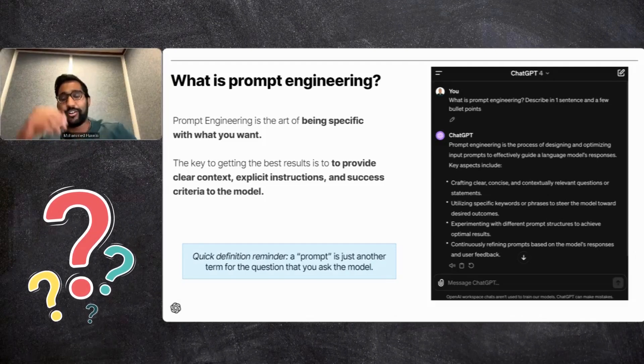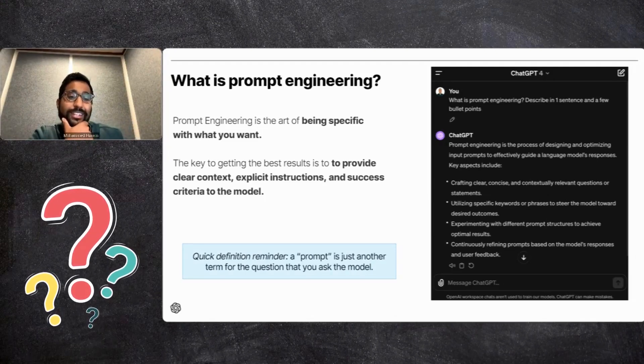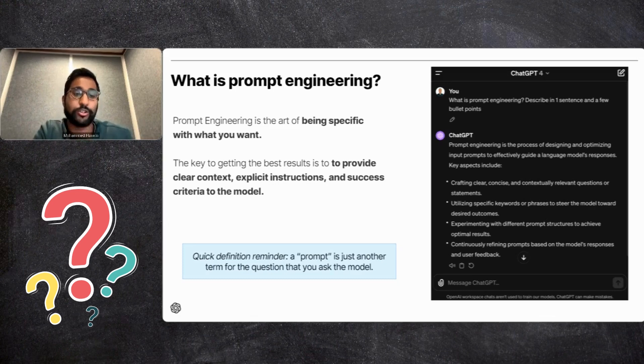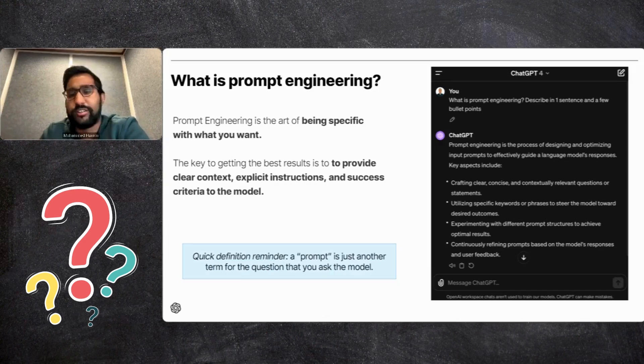So what is prompt engineering? Our definition is that it's the art of being specific with what you want. If you hear this term called a prompt, it's just another term for the question that you ask the model. On the right hand side here, you see this image and the prompt is 'What is prompt engineering? Describe in one sentence and a few bullet points.' That's using prompt engineering to specify that you want it in a specific style.